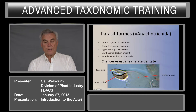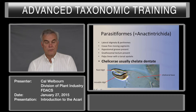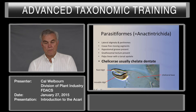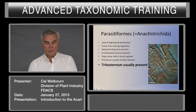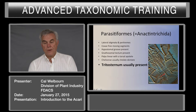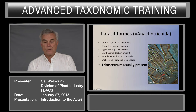Chelicerae are usually chelate. Their chelicerae consist of a fixed digit, a movable digit, and a cheliceral base. It's pretty consistent through most of the Mesostigmata. The tritosternum is a structure on the ventral side of the idiosoma, at the anterior end, just anterior to the sternal region. It's usually bifurcate.